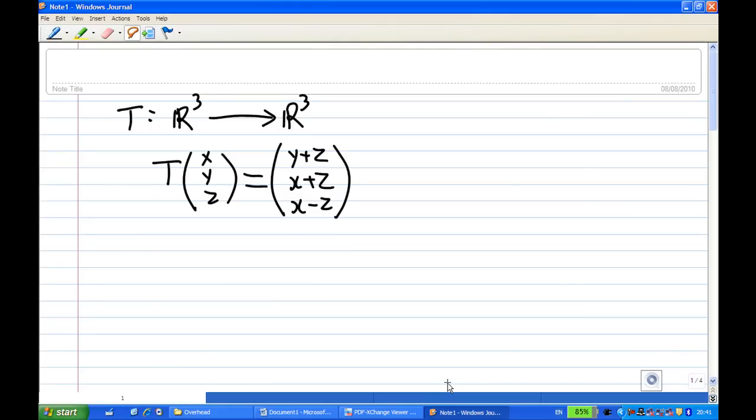The transformation is T times (x, y, z) equals (y+z, x+z, x-z). Let's look at T(e₁). Now e₁ is the first column of the identity matrix: (1, 0, 0). So that means x equals 1, y equals 0, z equals 0. Then you get 0 plus 0, 1 plus 0, 1 minus 0, and so this is equal to (0, 1, 1).